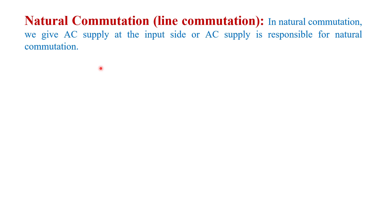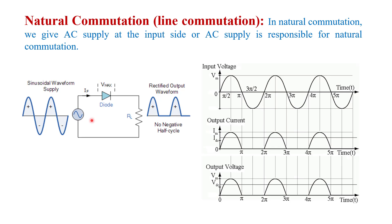I will explain the procedure of natural commutation with the help of this diagram — a simple single-phase half-bridge rectifier circuit. We give AC input supply at the input side, with one diode and load resistance RL. During the positive half cycle of AC input supply, the anode of the diode is positive with respect to cathode and the diode starts conducting, behaving like a closed switch. Current flows and the output current across the load equals the supply current. Output voltage also equals supply voltage Vs. The input voltage waveform is Vm·sin(ωt). During the positive half cycle, ωt = 0 to π, the diode is conducting and output voltage and current equal the supply values.